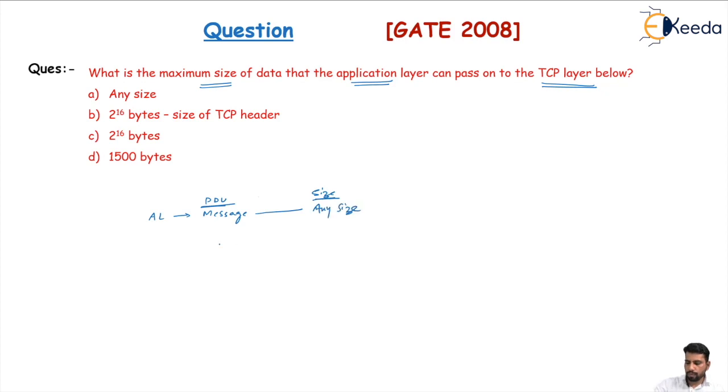But at the transport layer, the PDU is called a segment. The size of the segment is limited to 2^16 minus IP header size bytes. And at the network layer, we call this a packet or datagram, and the size is 2^16 bytes.